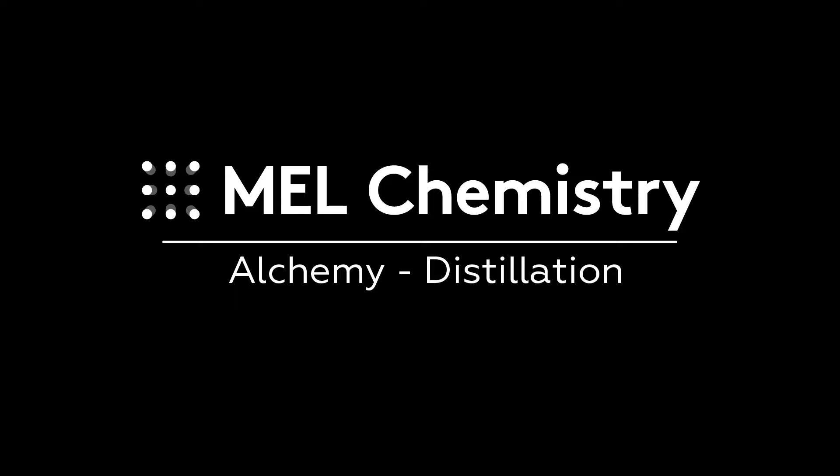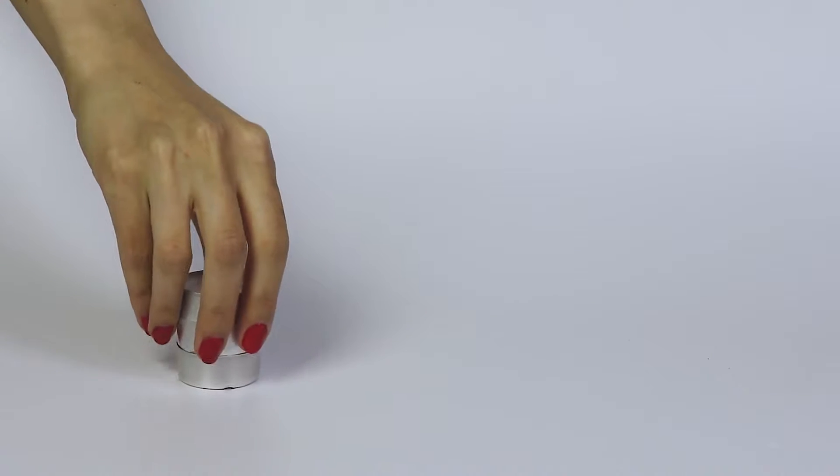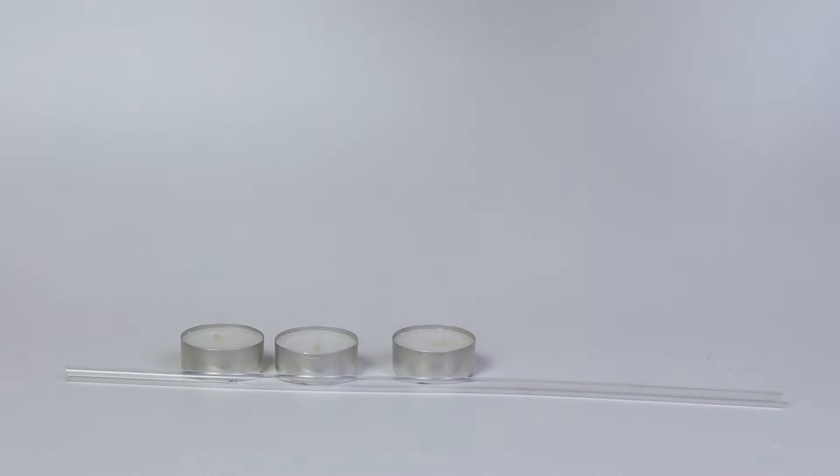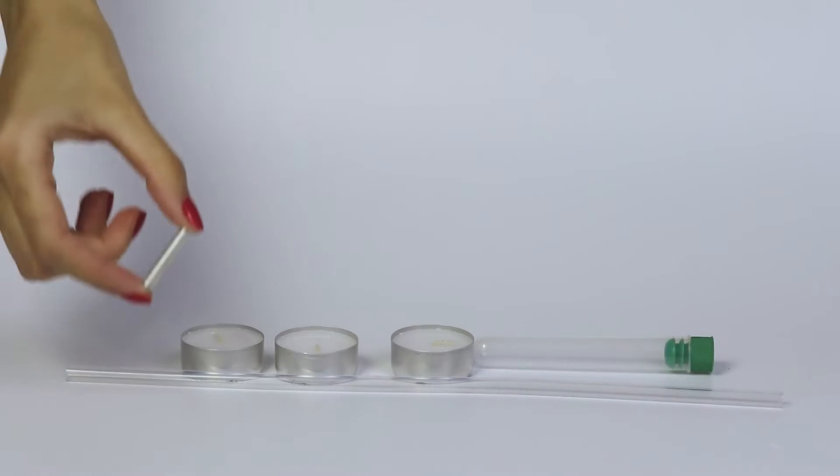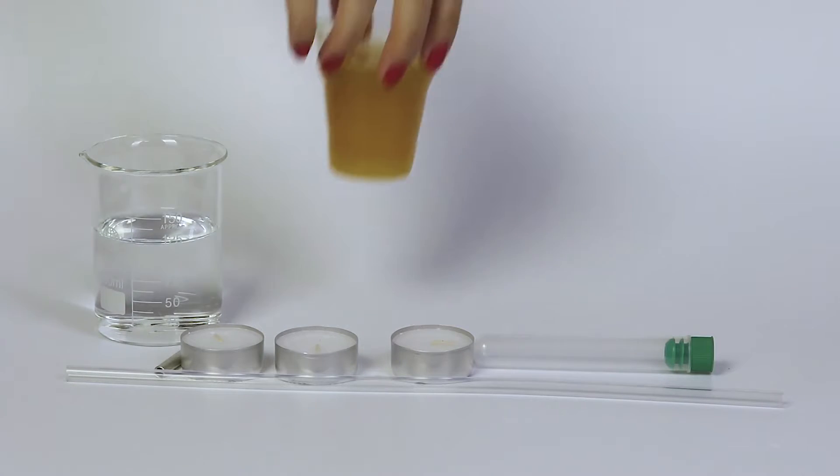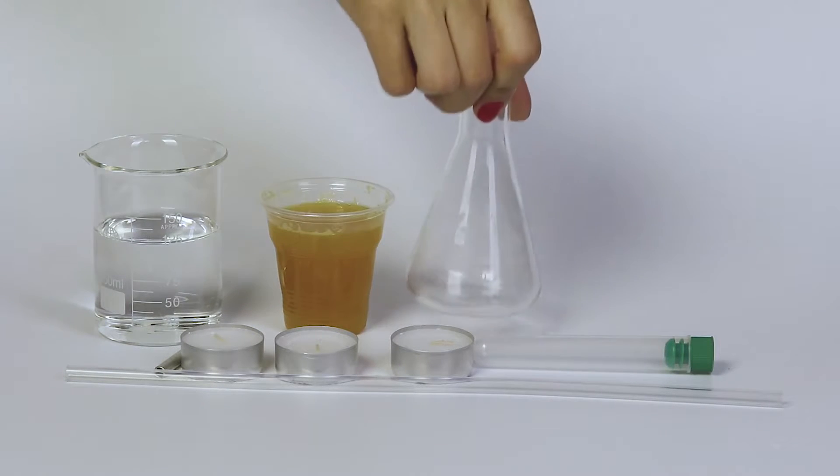For the distillation experiment, you will need three candles, a silicon tube, a test tube with a stopper, a metallic cylinder, a beaker filled with cool water, fruit juice, the flask, and the funnel.